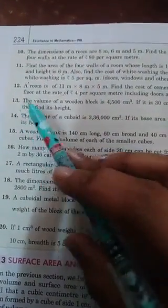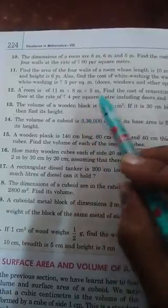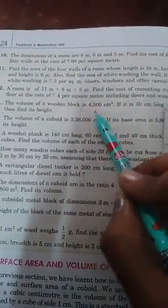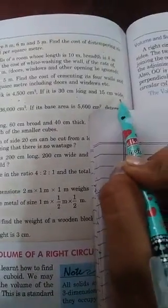Question number 13. The volume of a wooden block is 4500 centimeter cube. If it is 30 centimeter long and 15 centimeter wide, find its height. Volume is given, length is given, breadth is given. We have to find height.